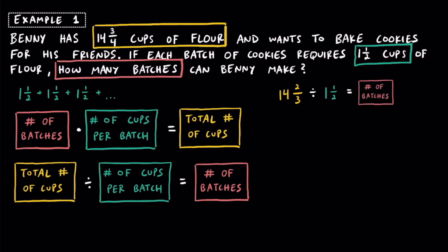Converting to an improper fraction: 14 times 3 is 42, plus 2 is 44, so we'll have 44 over 3. We're going to divide this by one and a half, which also has to be turned into an improper fraction. One times two is two, plus the one on top is three, so one and a half as an improper fraction is three halves. Finding this quotient will tell us the number of batches. We're going to turn this into a multiplication problem using keep, change, flip.